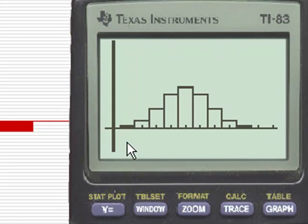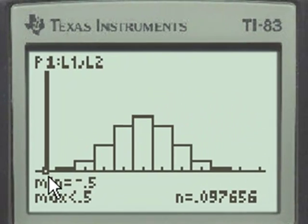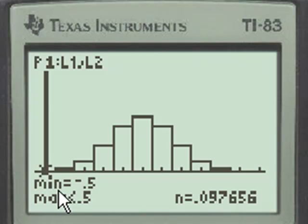And now we see our graph looks very much like a normal distribution. If we use the trace function, we see that for the first class, and that's a class with a minimum of negative 0.5, a maximum of positive 0.5, and the height of the bar corresponds to n, which is the percentage of 0.097656. And that would be the probability of taking the test, guessing on every problem, and getting all 10 problems wrong.